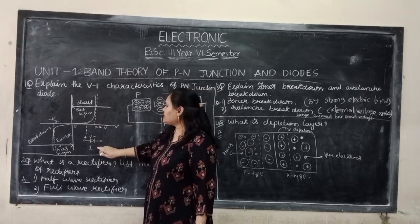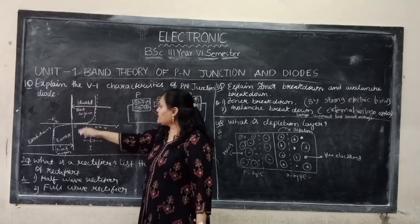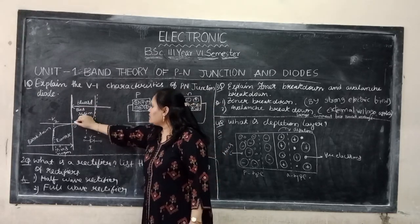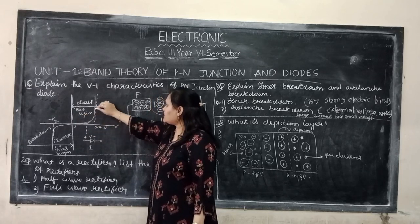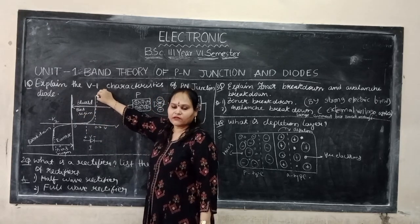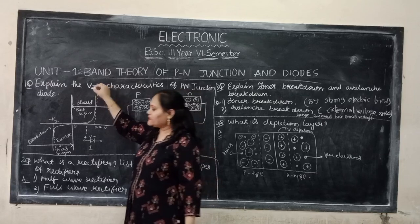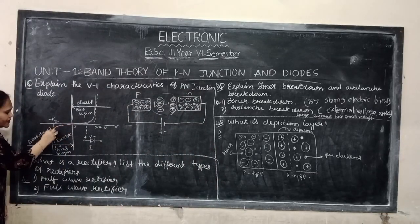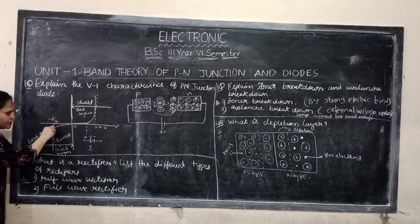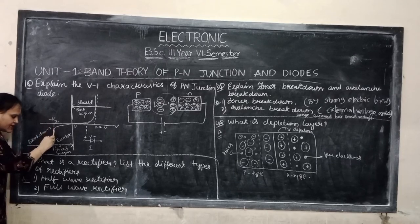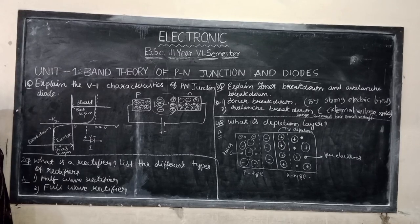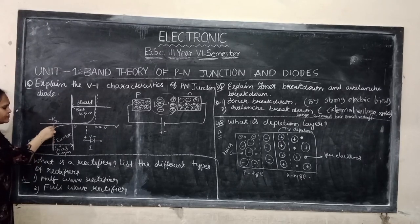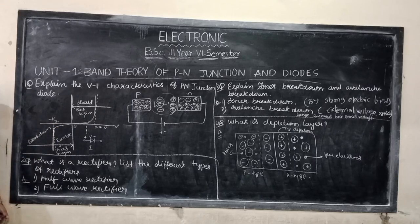Looking at the IV characteristics: when forward bias voltage increases, the current also increases. As voltage increases more, current increases more. In reverse bias condition, the current remains nearly constant at a very small value.